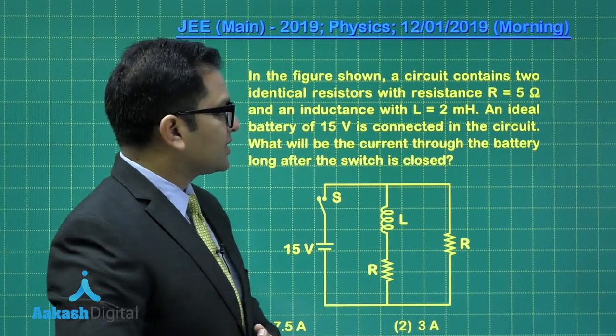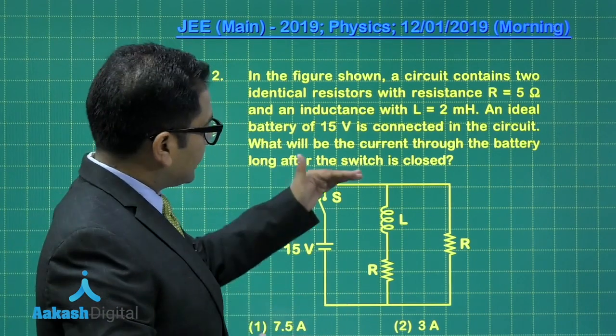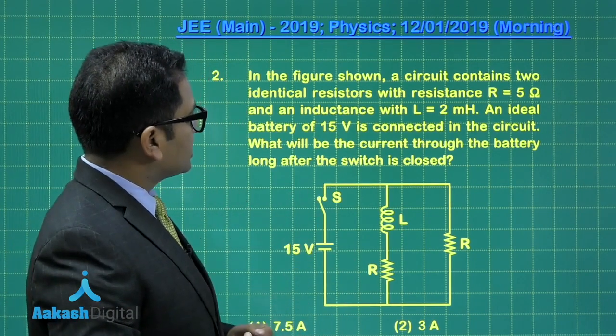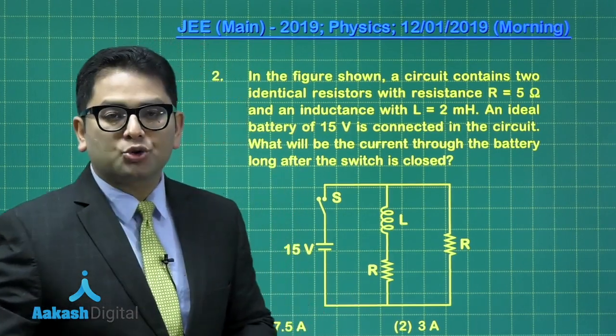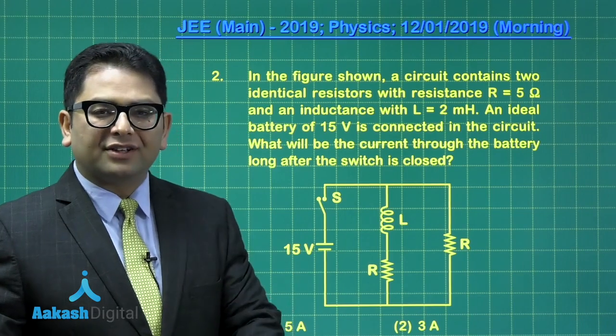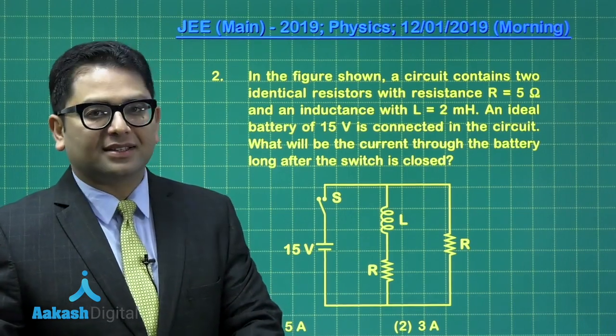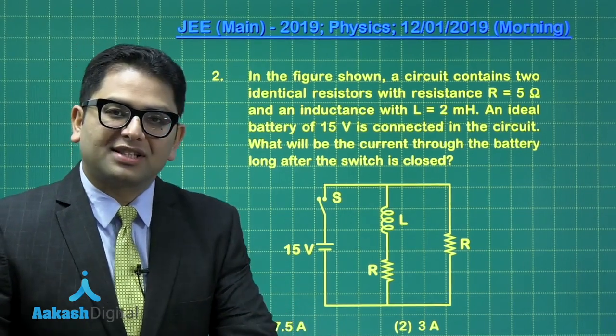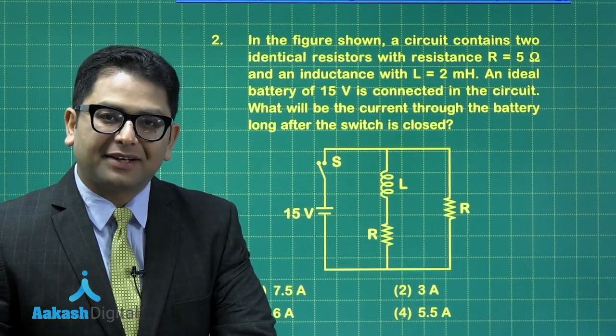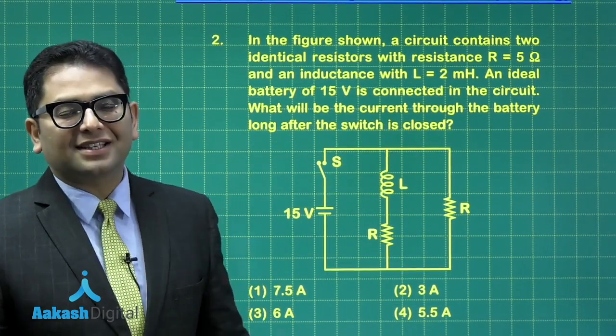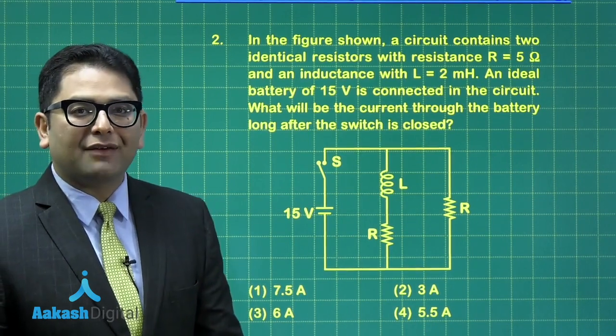Let's see what is the question all about. In the figure shown, a circuit consists of two identical resistors, so this and this have resistance five ohm. This has two millihenry. There's an ideal battery of potential difference 15 volt connected in this manner. The question says what will be the current through the battery long after the switch is closed. Long after the switch is closed means this circuit has reached the steady state, and in steady state, inductors behave as short circuit.